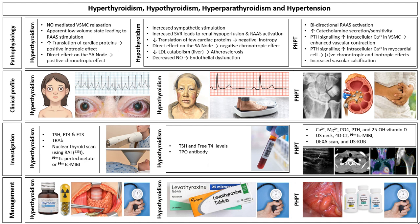Both hyper- and hypothyroidism and primary hyperparathyroidism are associated with hypertension. Naomi Swartbard and Duncan Topless provide the pathophysiology, clinical picture, evaluation algorithm and management of these disorders in Chapter 16, Hypertension in Thyroid Disease and Hyperparathyroidism.